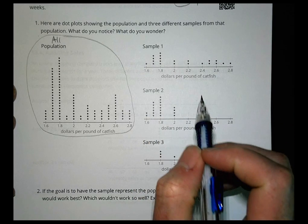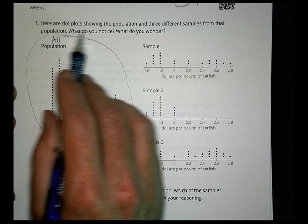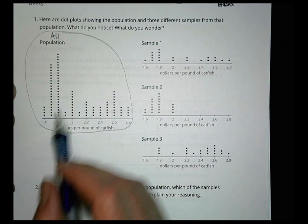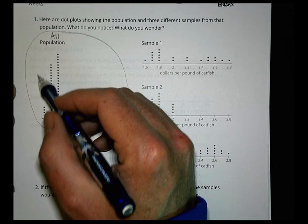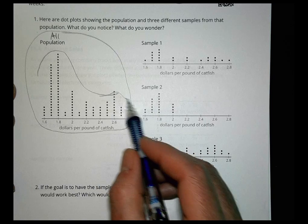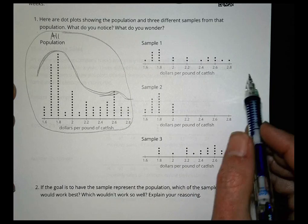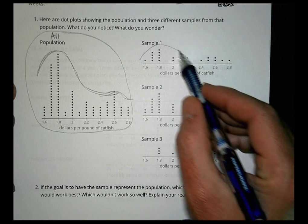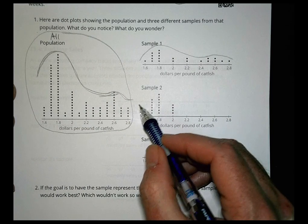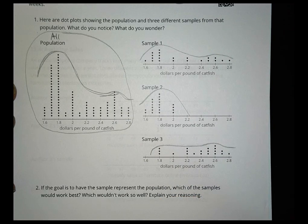Looking at the shape of the population dot plot: it's high on one side, drops down, with a small bump, then down again. Sample 1 has a similar shape — goes up, comes down, small blip, then down. Sample 2 goes up the same but then disappears. Sample 3 has a very different shape overall.